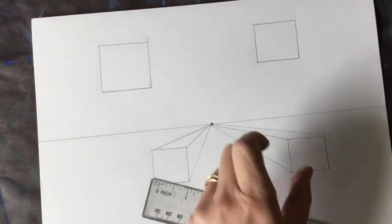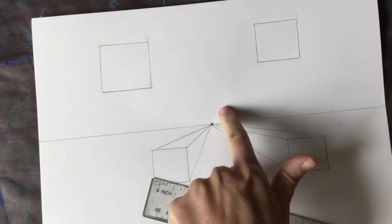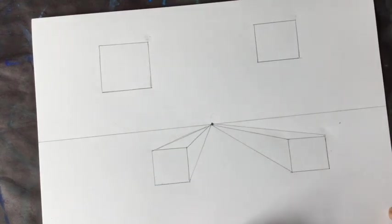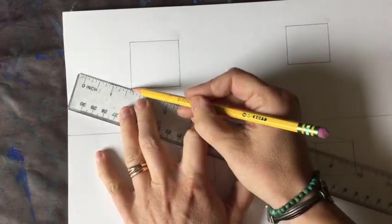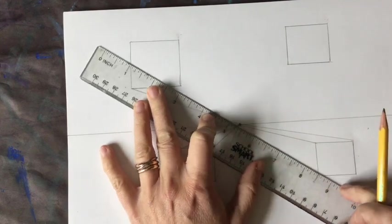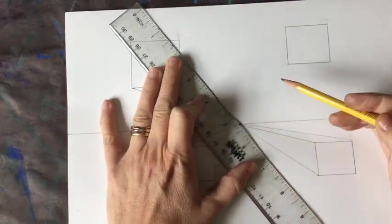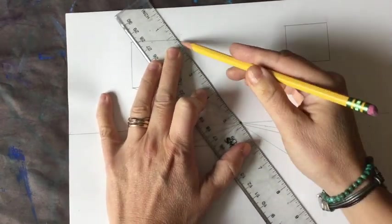I'm going to continue this for all corners of my squares. Now I could do this corner if this was a see-through cube, but if it's a solid form, then I wouldn't connect that corner to the vanishing point because I wouldn't be able to see that angle. Coming up to the top. That one was a little bit off.